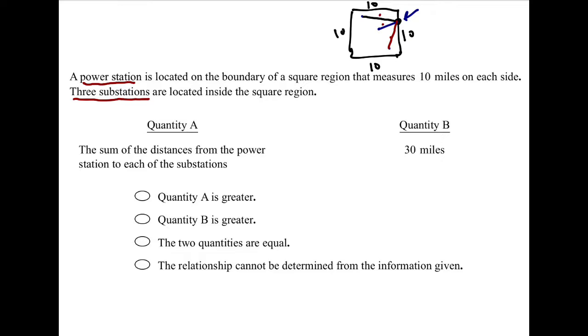And I'm comparing it to quantity B, which says 30 miles, a very distinct value. I don't think we have enough information to figure this out. My mind goes to this, which may or may not be important for you.